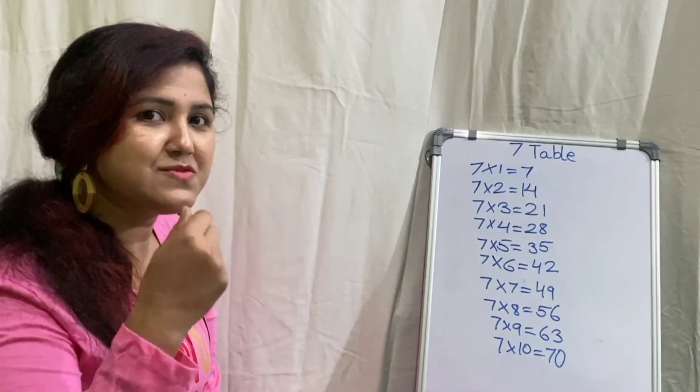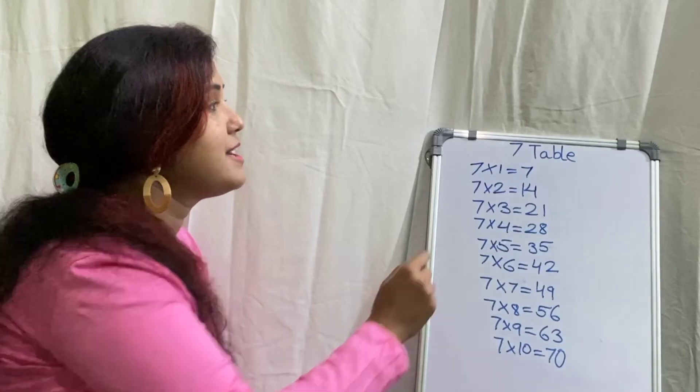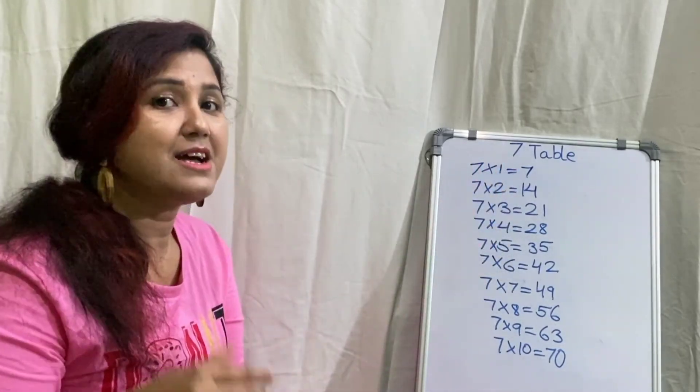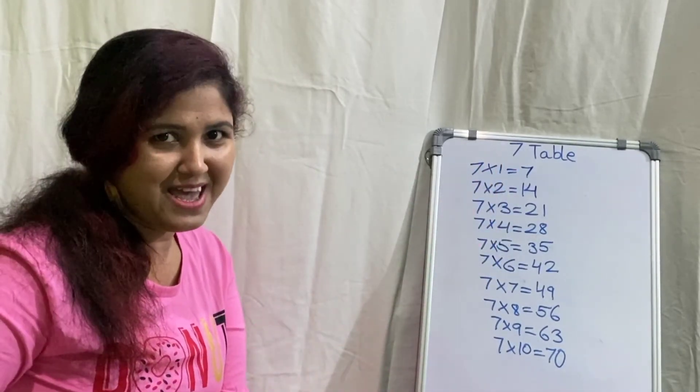So children, what do you have to do? Also, you have to learn the table of seven at your home. Okay? Bye-bye!